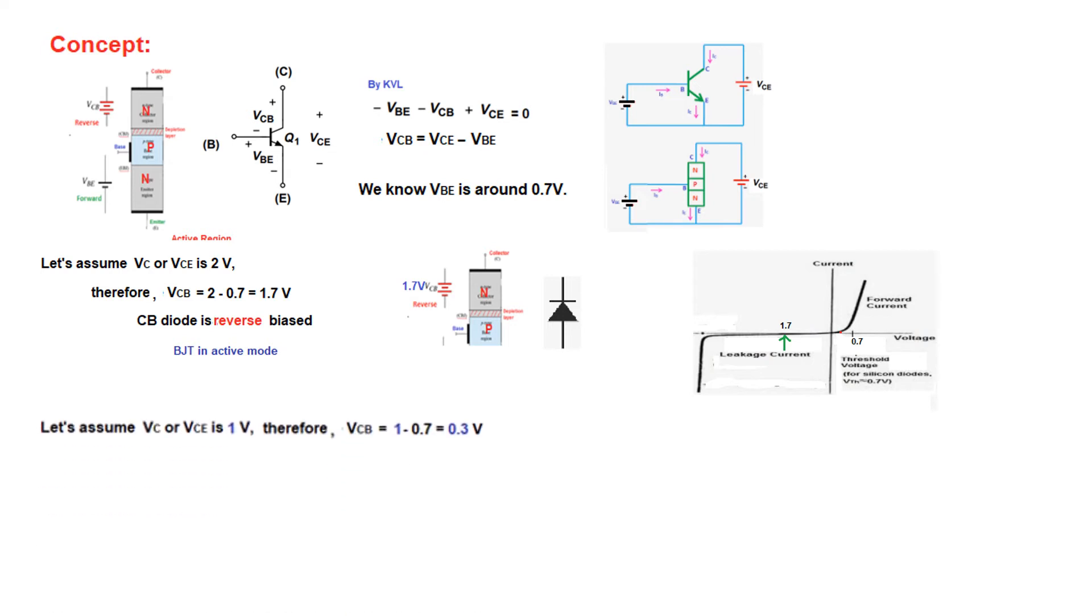Now let's reduce this VCE to 1 volt. So when VCE is 1 volt, VCB will be 0.3. And so this is 0.3, but it is still making this diode reverse biased. And therefore the diode is still reverse biased. And we can say that the CB diode is reverse biased. Therefore BJT is in active mode still. And if you see in this diagram, we have moved closer to the right hand side, but we are somewhere here 0.3 volt.